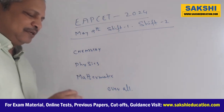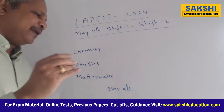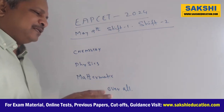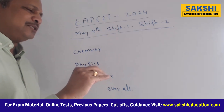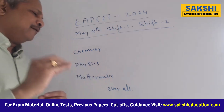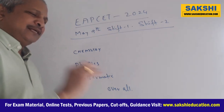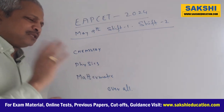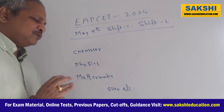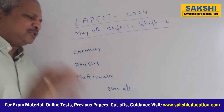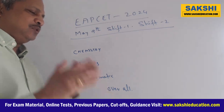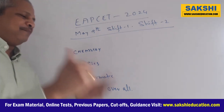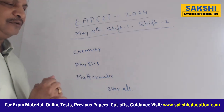Around 20 marks of questions are direct formula-based with small concept changes. So almost those who know the concept and know the formula can apply for 20 marks.